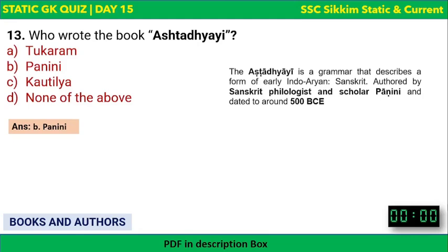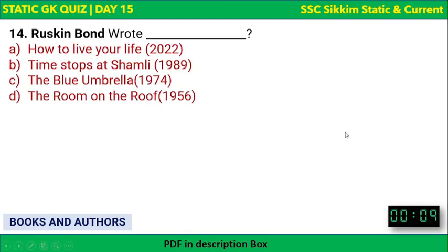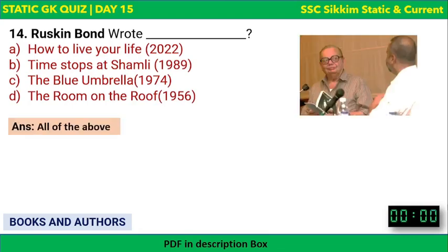Ruskin Bond wrote which of these books? The options are 'How to Live Your Life' (2022), 'Time Stops at Shamli' (1989), 'The Blue Umbrella' (1974), and 'The Room on the Roof' (1956). All of these books have been written by Ruskin Bond. Remember his most recent book: 'How to Live Your Life.'